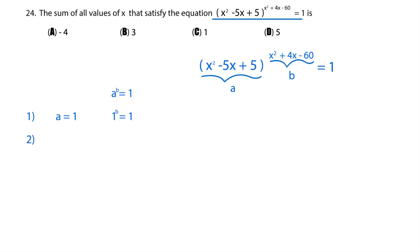Another possible scenario is if b is equal to 0, that would make it a to the power of 0, and anything to the power of 0 is equal to 1.